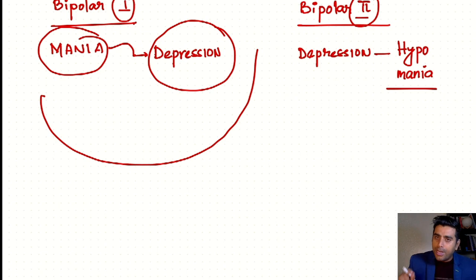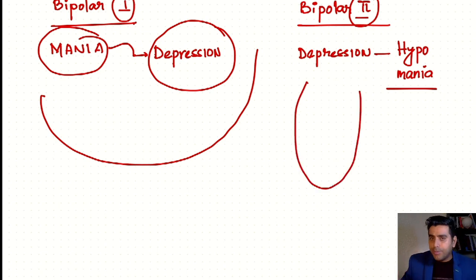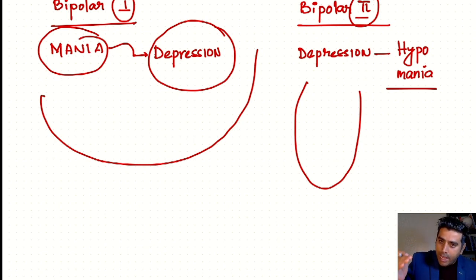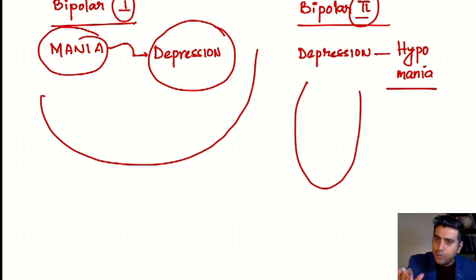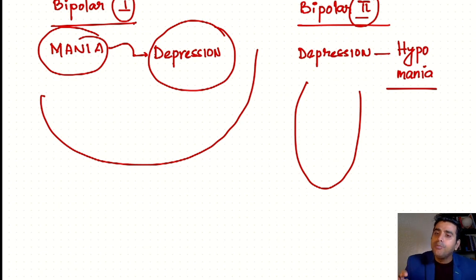In Bipolar Type 2, there will be a very typical phase of depression, but you will not get full mania. Instead, you will have a little less mania — what we call hypomania. So in Bipolar Type 2, you will have depression and hypomania, not mania.